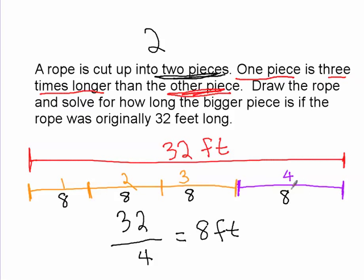So that means that each of these is eight feet long. So the little piece of rope is just eight feet long. The other piece of rope, that is three times longer, you have to figure it out by adding all three parts up.